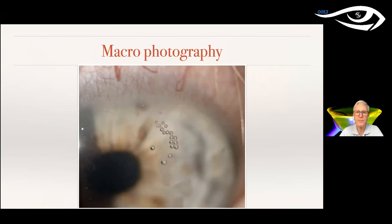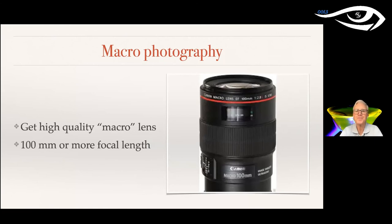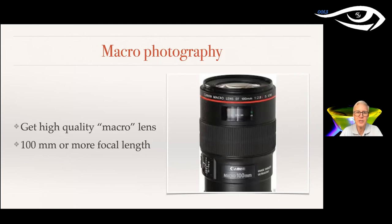Let's talk about true macro photography. Here you see a scleral lens with a little leakage on the top portion — as the patient blinks, he's pumping in little air bubbles, which tells me the scleral lens is not aligned properly in the vertical meridian. You can really document this with some great pictures. For macro photography you really do need a dedicated macro lens, defined as a lens with a focal length of 100 millimeters or more. I use a Canon because they're fairly affordable and have a lot of accessories.